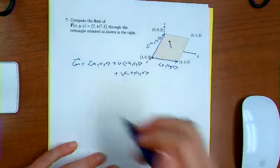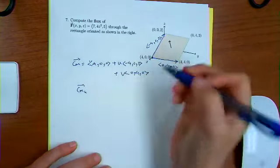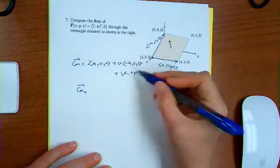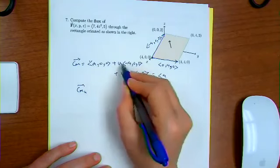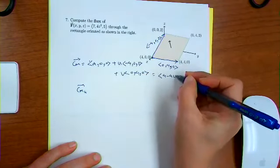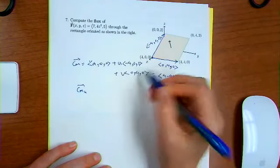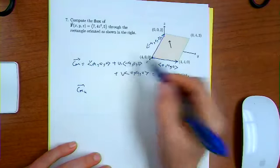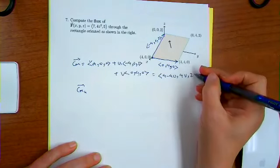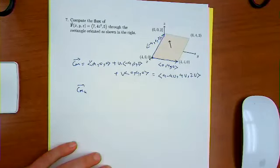So that's my parametrize. Now, g sub u is, and I can clean this up. I can write it as four minus four u and zero plus zero u plus four v, and then zero plus two u plus zero v. So that's a cleaned up form.